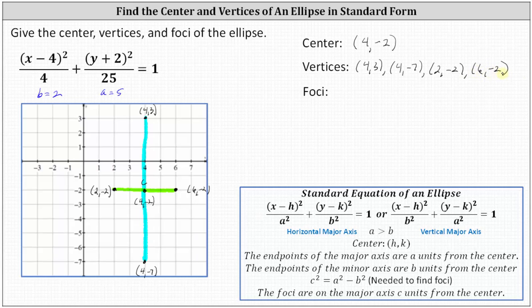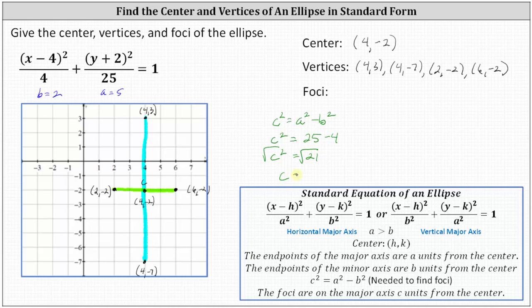Now before we find the foci, we have to find c, because the foci are c units from the center on the major axis. Using the equation c squared equals a squared minus b squared, in our case we have c squared equals 25 minus four. C squared equals 21, so taking the principal square root of both sides, c equals the square root of 21. Because the foci are on the major axis and we have a vertical major axis, we add and subtract the square root of 21 to the y-coordinate of the center.